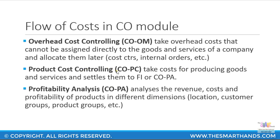Product cost controlling goes to a deeper level, where for each individual product you analyze itemized costs such as direct costs, indirect costs, and so on. You can then settle these costs to the FI or COPA module — we will look at this in more depth in upcoming presentations. Lastly, profitability analysis lets you analyze the revenue, cost, and profitability of your products by different dimensions such as region, location, customer groups, and product groups.